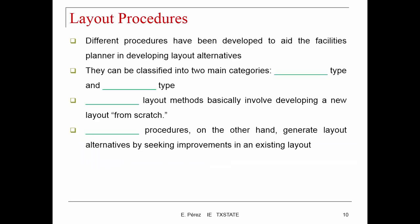Let's talk about some layout procedures. Different procedures have been developed to aid facilities planning in developing layout alternatives. They can be classified in two main categories: the construction type and the improvement type. Construction type layout methods involve developing a new layout from scratch — for a new facility with nothing inside. Improvement procedures, on the other hand, seek improvement in an existing layout.